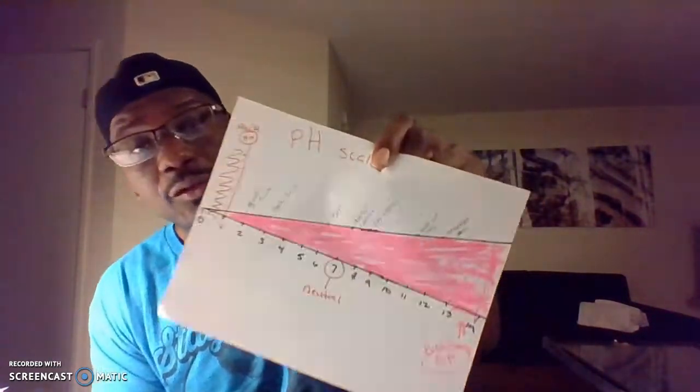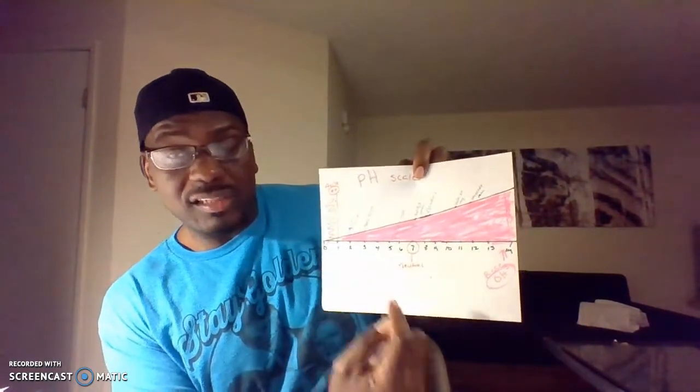And this is what a pH scale looks like right here. It's numbered zero to 14 — zero being a very strong acid and 14 being a very strong base. Some examples: gastric juice is a two, apple is three, corn is six, water is seven which is neutral (distilled water), milk of magnesia is 11, and household ammonia is about 13. As you go toward zero, the solution has more hydrogen ions; further toward 14, it has more OH ions.